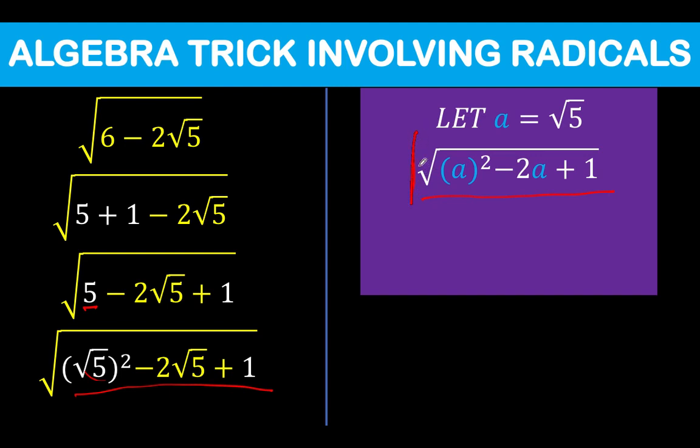Now, since our radicand is a perfect square trinomial, we can now factor this out as the square of the binomial a minus 1.